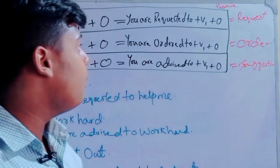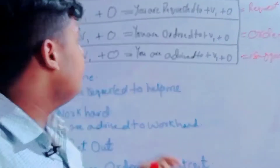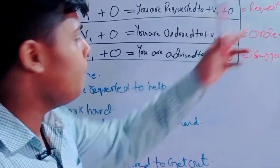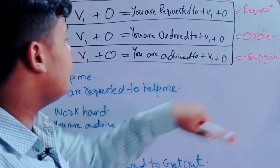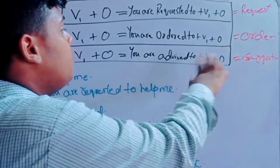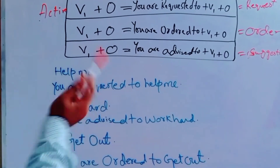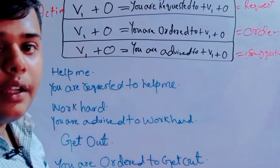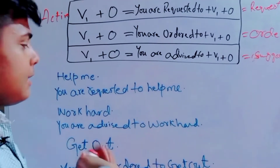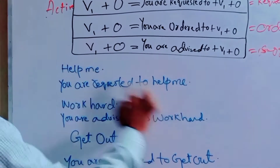Same-to-same: we write the verb's first form plus object. For an order sentence, we use 'you are ordered to', followed by the verb's first form plus object. For a request sentence like 'Help me', the passive becomes 'You are requested to help me' — same structure.